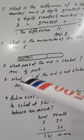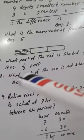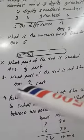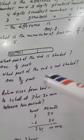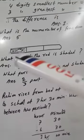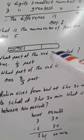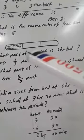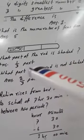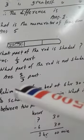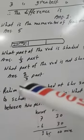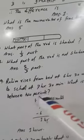One part is shaded out of 3 parts, so the answer is 1/3. What part of the rod is not shaded? Here there are 3 parts and 2 parts are not shaded. 2 parts not shaded out of 3 parts, so the answer is 2/3.